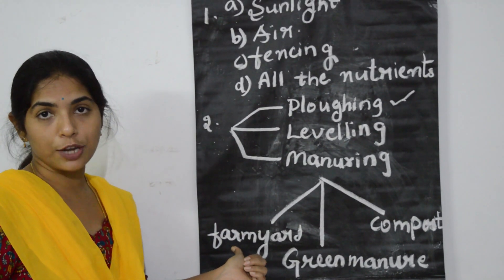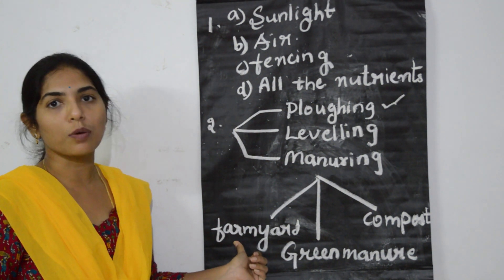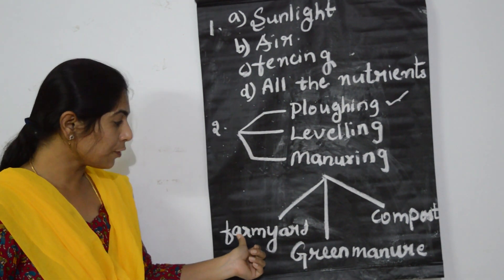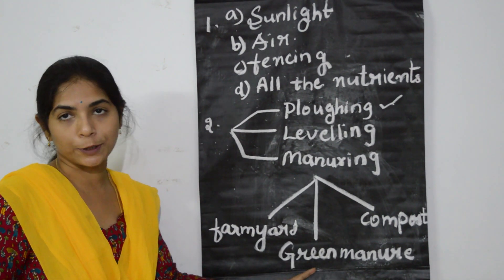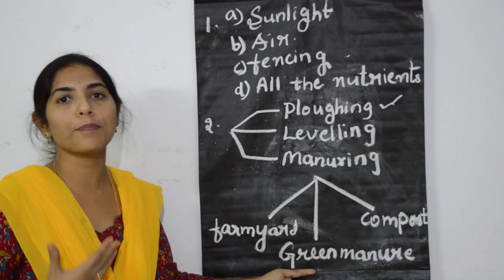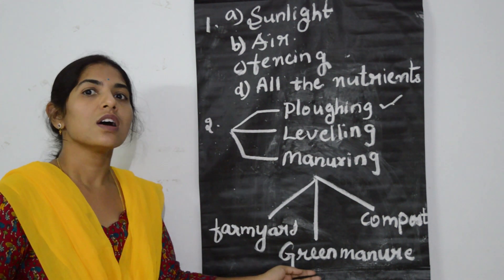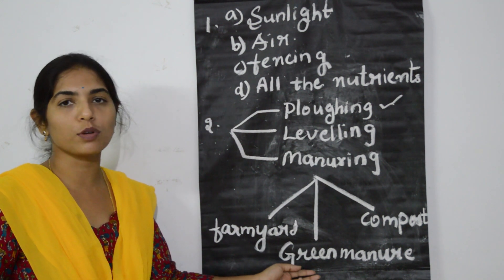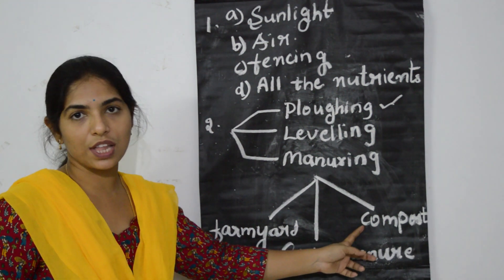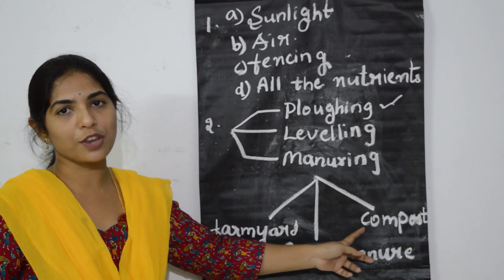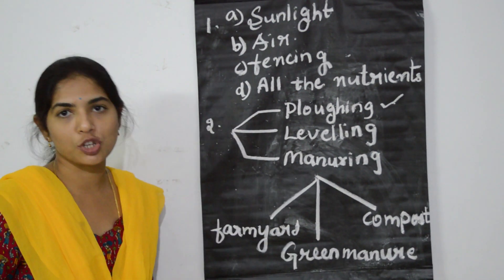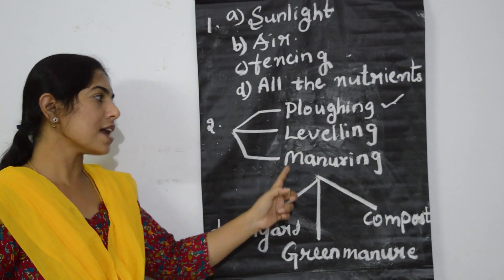Farmyard manure includes farm materials like cowdung and also leftover leaves, straw, etc. Green manure is obtained when, after the crop produce is harvested, the leftover parts of the plant are ploughed into the soil so that they get decomposed by soil bacteria and are converted into humus. Compost manure consists of cattle shed waste as well as dry leaves. So these are the three steps for preparation of the soil: ploughing, levelling and manuring.